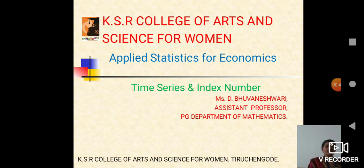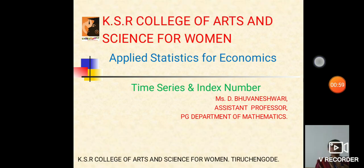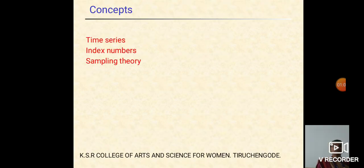An important aspect of Applied Statistics is to study about the present and future behavior of the activities performed in the industry. In this video, we will discuss about the theoretical and the applications of the statistical methods of time series, index numbers and sampling theory. Each one of them has its importance in its field of applications.